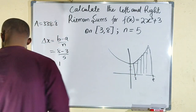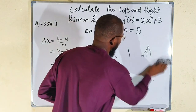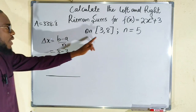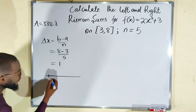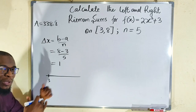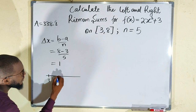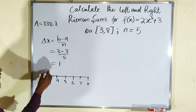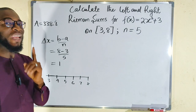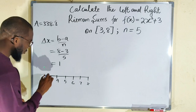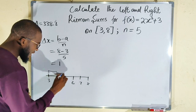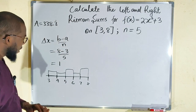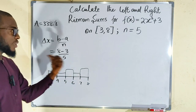Let me use a number line to illustrate. We start from 3 and stop at 8. Adding dx of 1 each time: 3, 4, 5, 6, 7, 8. This is where we construct the rectangles. For the left Riemann sum we consider the left endpoints. With five rectangles, we take the left legs at positions 3, 4, 5, 6, and 7.